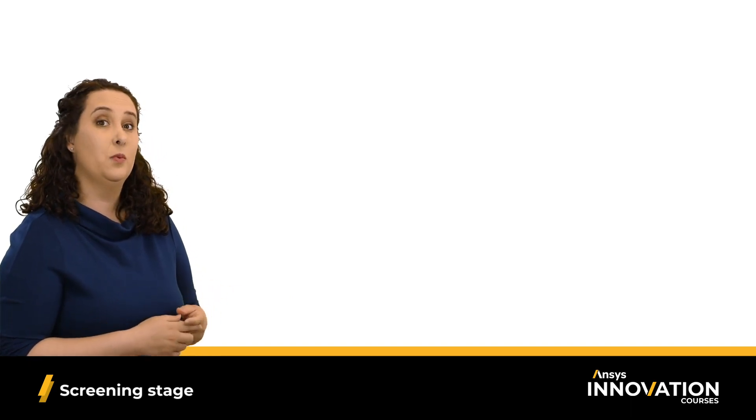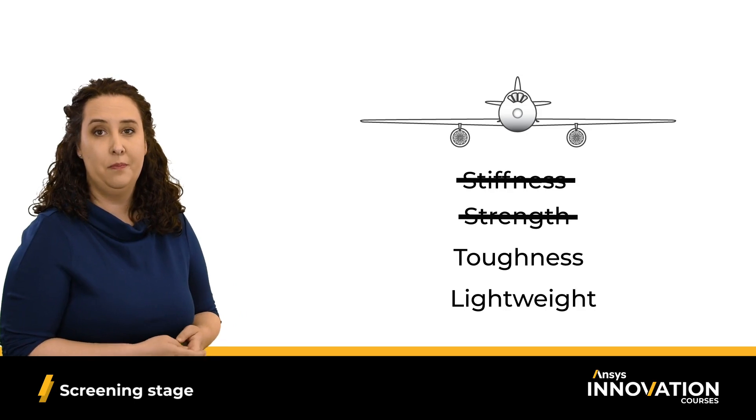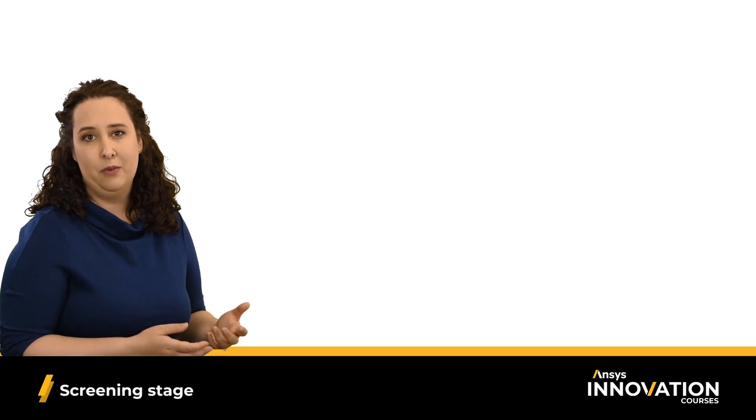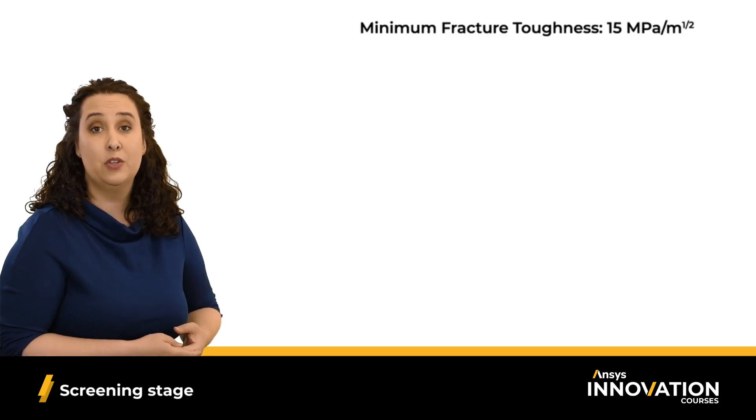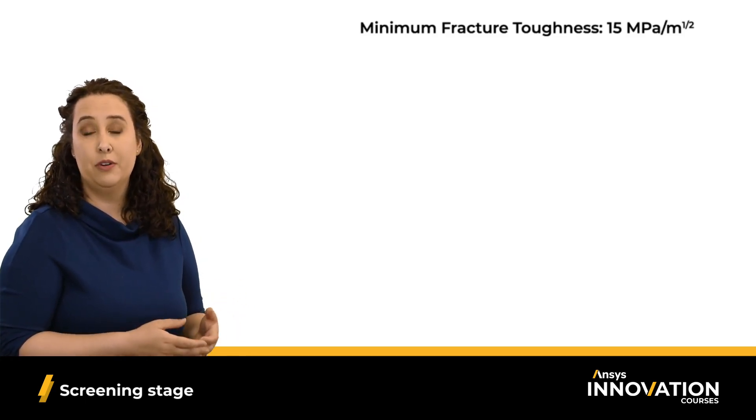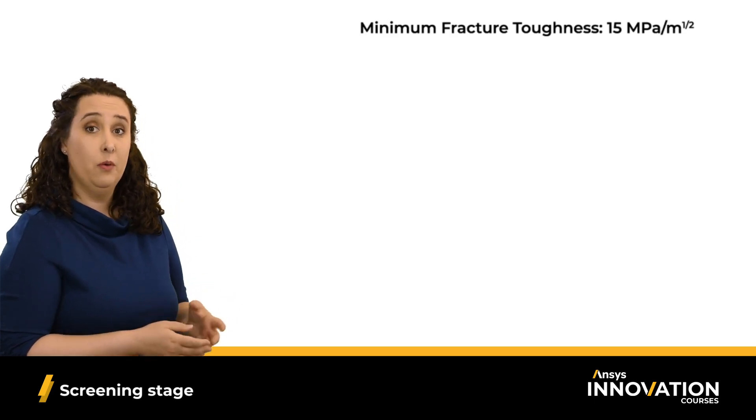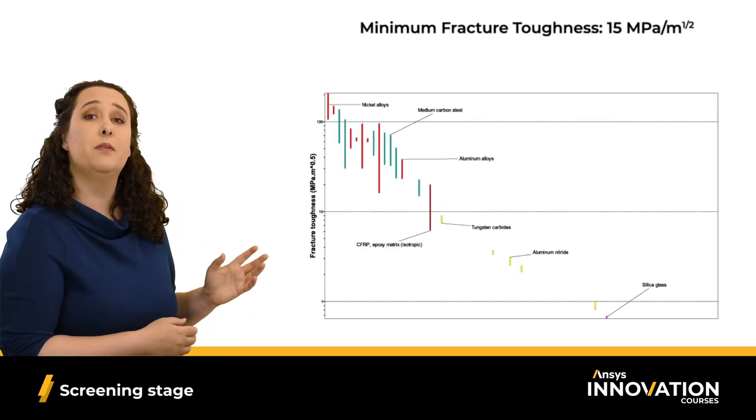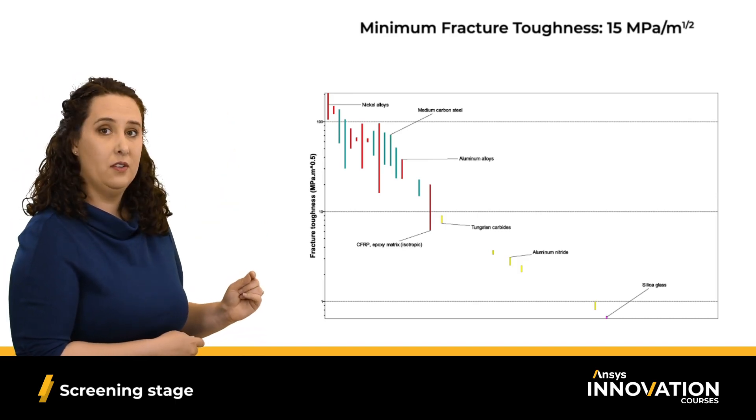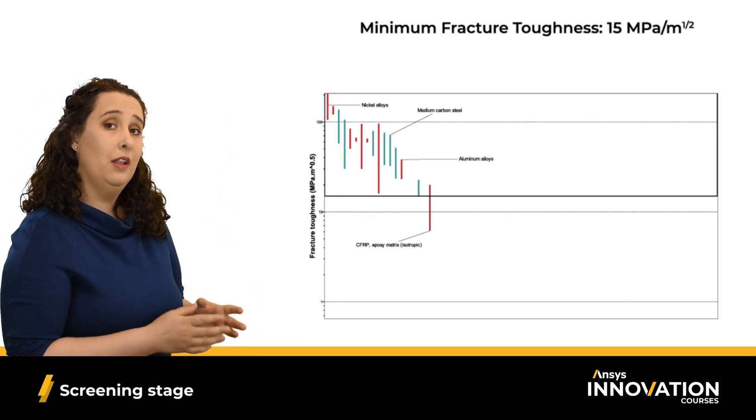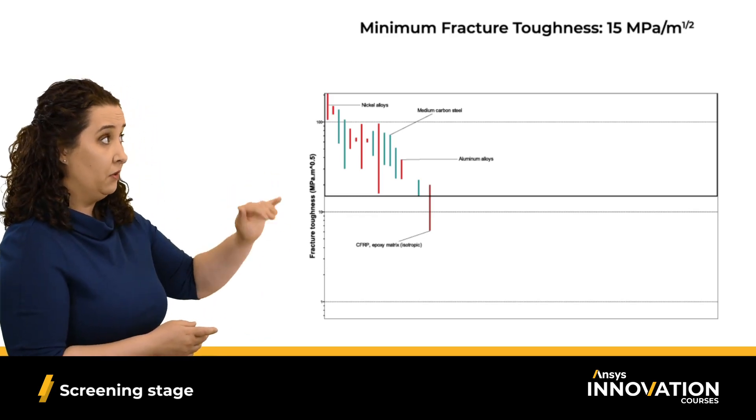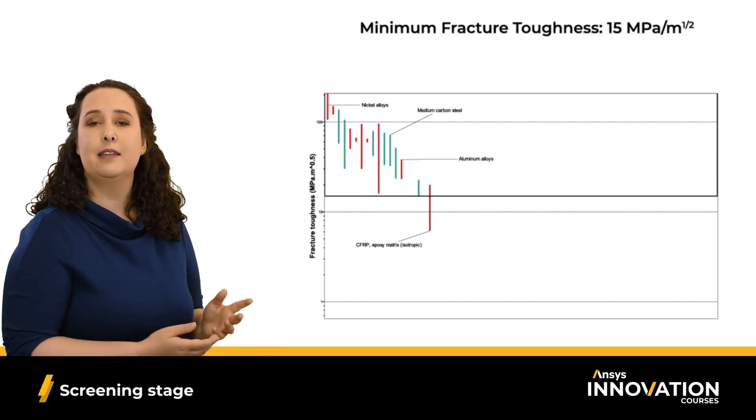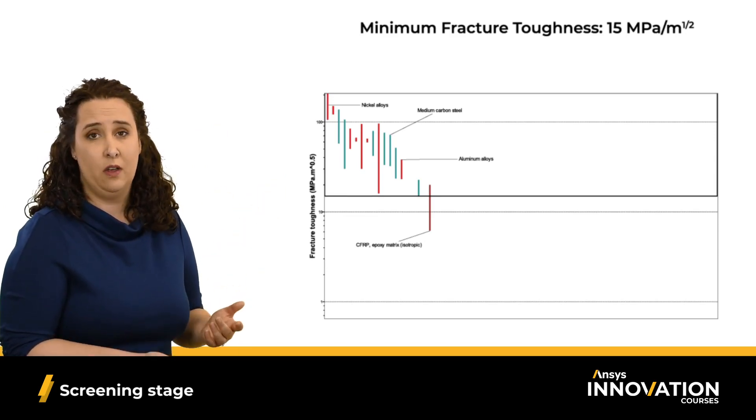So next on our list was toughness or the fracture toughness of our material. Again, based on some background research, we know that we need a minimum value of 15 megapascals per meter to the one half for the fracture toughness of our material for this airplane wing. So let's plot fracture toughness in a bar chart where fracture toughness is along the y-axis. If I draw a line at 15 megapascals per meter to the one half and I only consider materials above that line, we can see that silica glass and all of our technical ceramics, such as tungsten carbide, are removed from consideration.